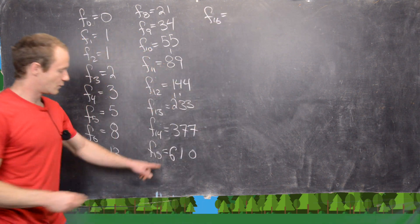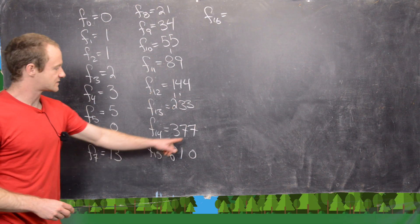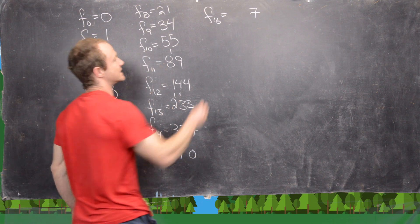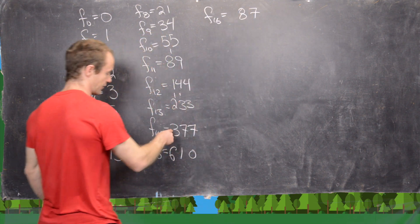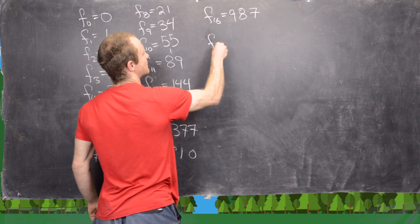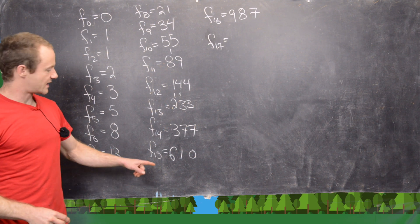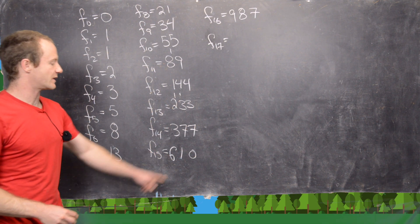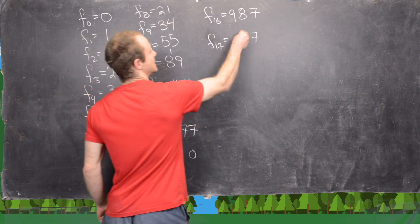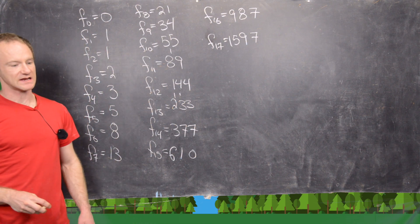The 16th Fibonacci number will be 610 plus 377. We have 7, and then 7 plus 1 is 8, and then 3 plus 6 is 9, giving us 987. And now the 17th Fibonacci number will be 987 plus 610. We'll get a 7 right here, then 8 plus 1 is 9, and then 9 plus 6 is 15, so we get 1,597.